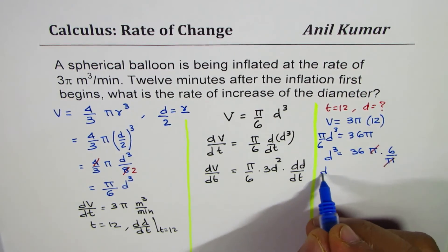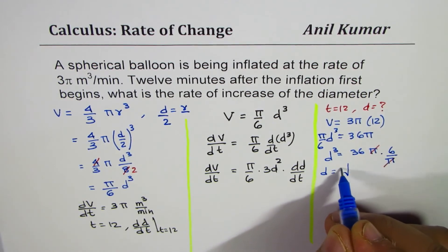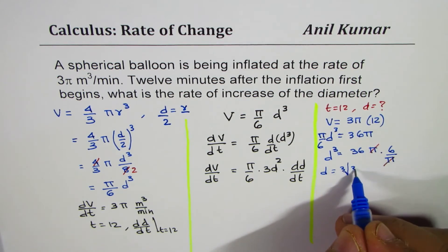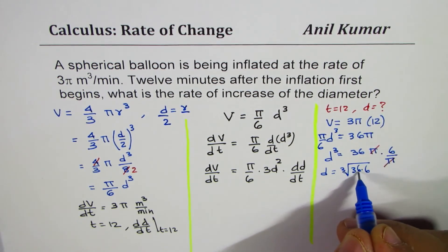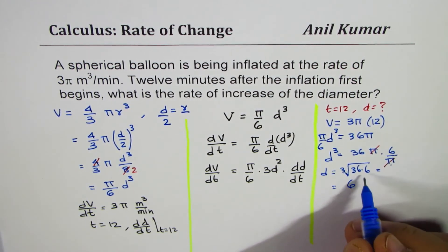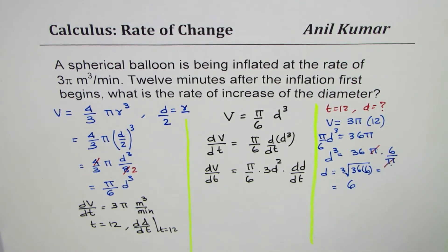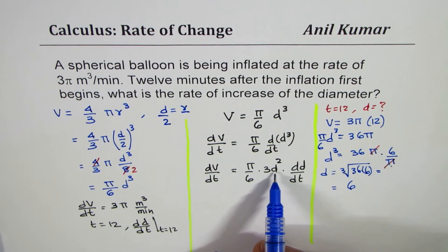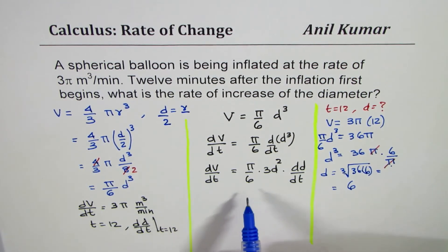d will equal the cube root of 36 times 6. As you know, 6 times 6 is 36, so we get diameter of 6. 6 times 6 times 6, so cube root will be 6. Now we know what d is.